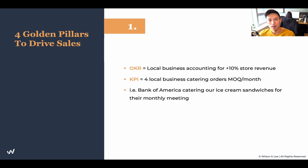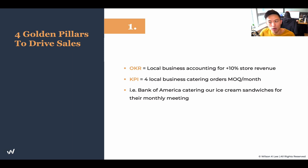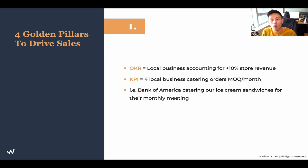Because you wouldn't be able to calculate the 10% until the year is over, that's the reason why we need KPIs. KPIs are short-term goals that allow us to achieve that 10% store revenue target, which is why every month we need at least four local business caterings coming through us to consistently hit that goal. For example, Bank of America catering our ice cream sandwiches for their monthly meeting. Once we have that one business signed up, we just need to find three more, and every month with four caterings we'll hit that 10% local business revenue target.